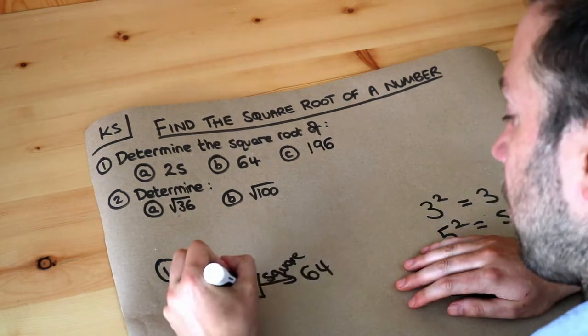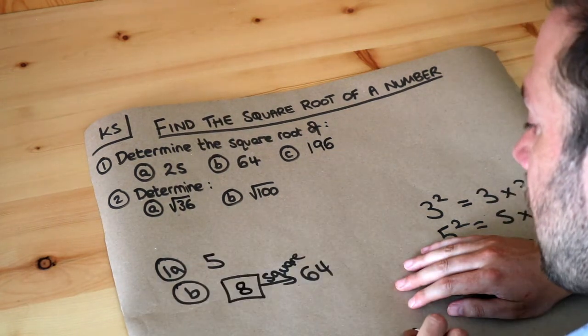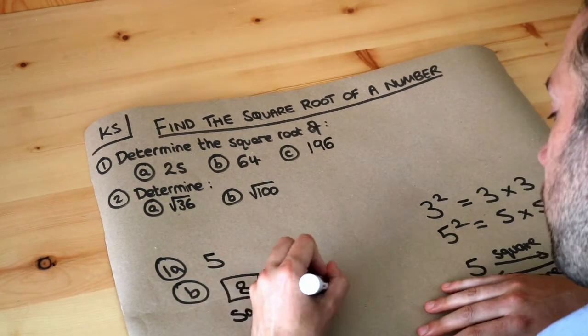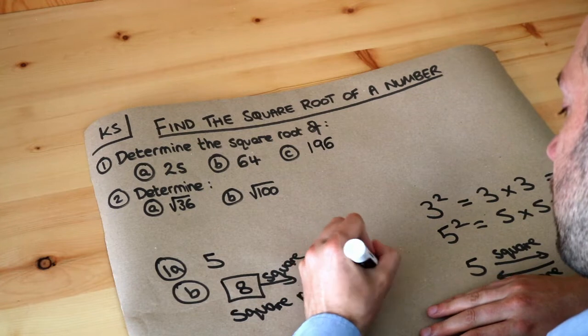8 squared is 64, that works. So 8 squared is 64 and then the answer is therefore 8. So the square root of 64 is 8.